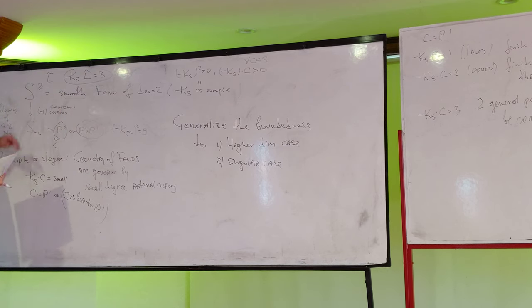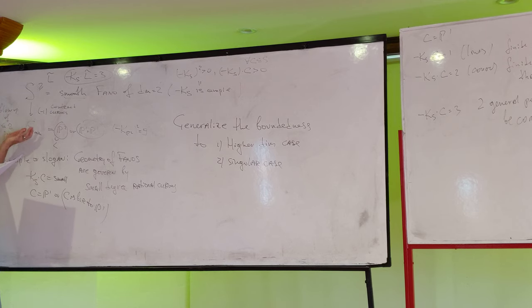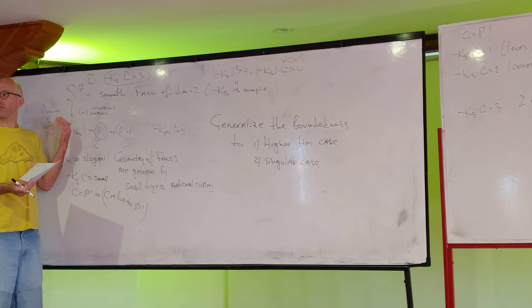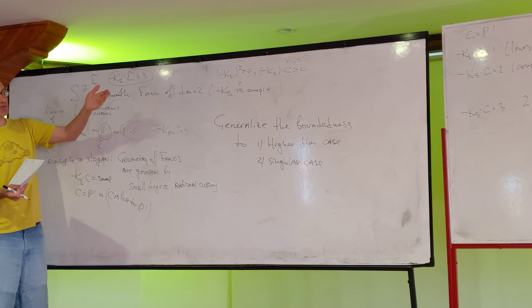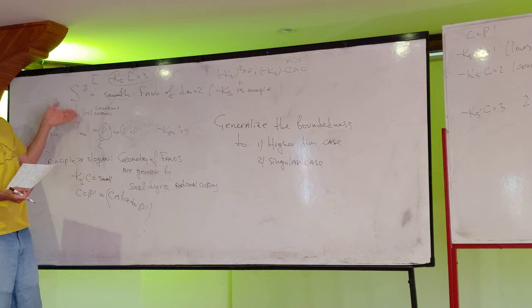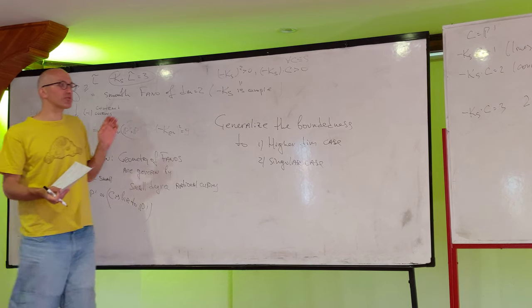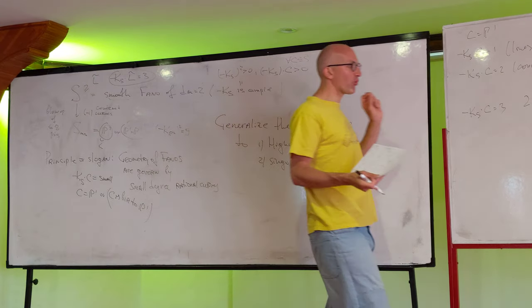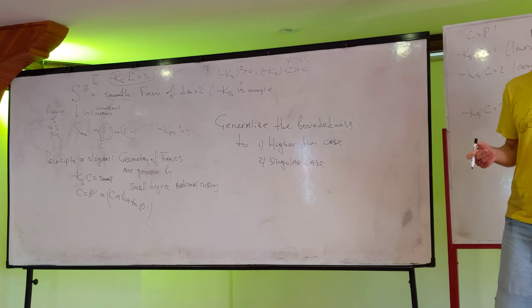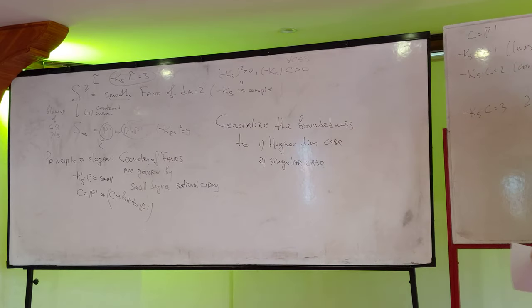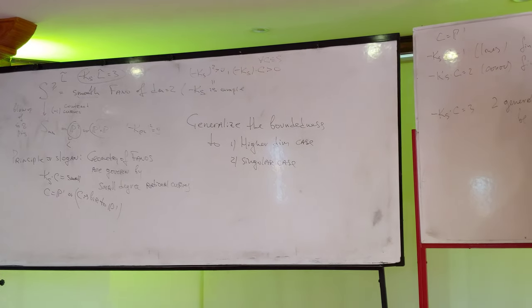And its anti-canonical degree is three. Because anti-canonical divisor of this surface, it's a lift of pullback of anti-canonical divisor of this guy, which is three lines minus exceptional curve. So, if you take a generic line that doesn't pass through points of blow-up, you get exactly this. And vice versa, if you have such curve, it's basically a finite number. Two general points can be connected by such curves. It's unique, basically.